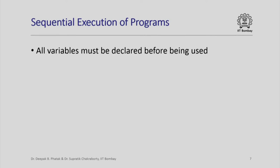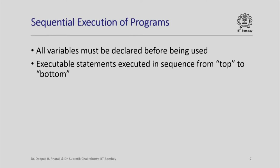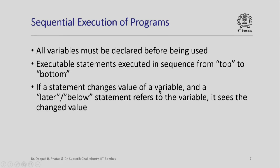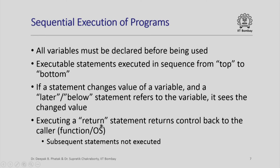What we need to remember about sequential execution is: all variables must be declared before we use them. Executable statements are executed by the computer exactly in sequence from top to bottom as they appear in the program. If a statement changes the value of a variable and a later statement refers to that same variable, the later statement will see the changed value. Whenever a return statement is executed, control passes back to whoever called the function — in our case, the operating system that called main.